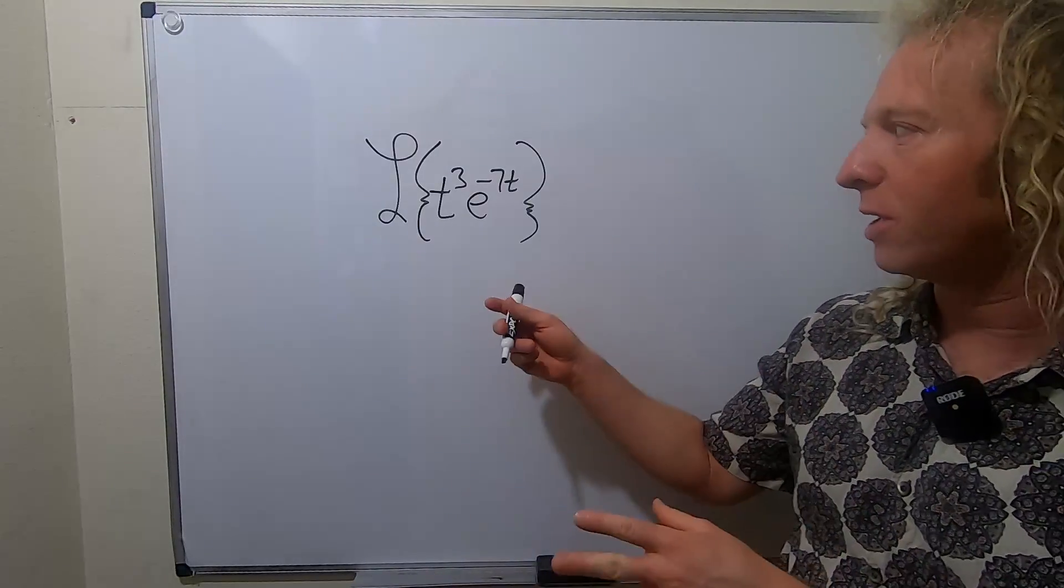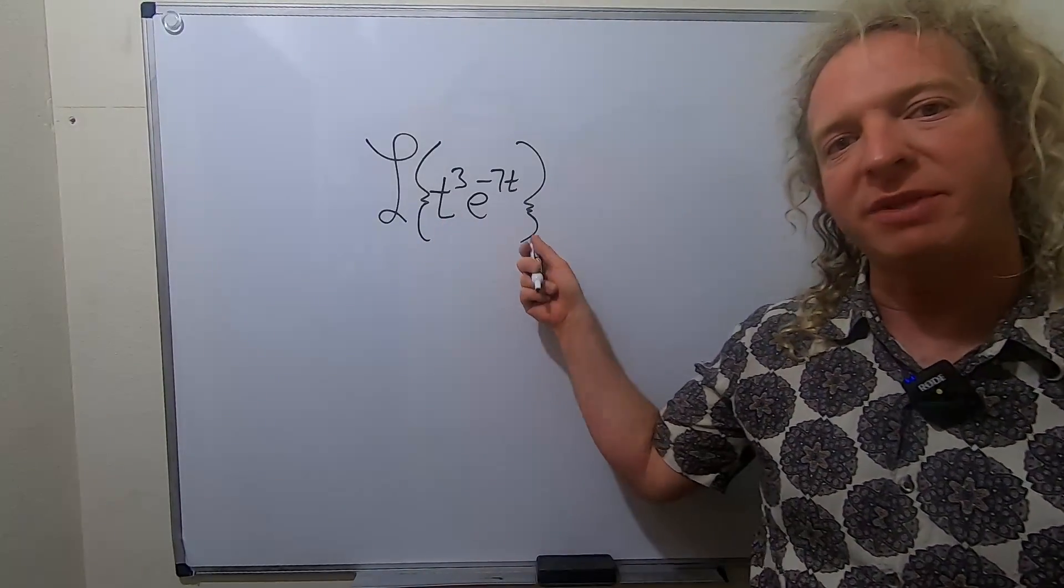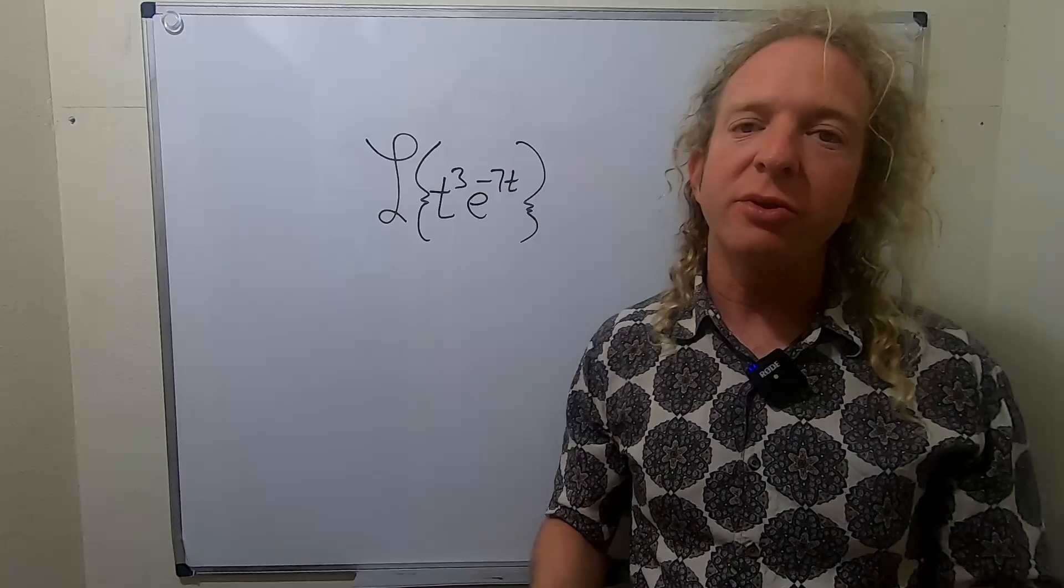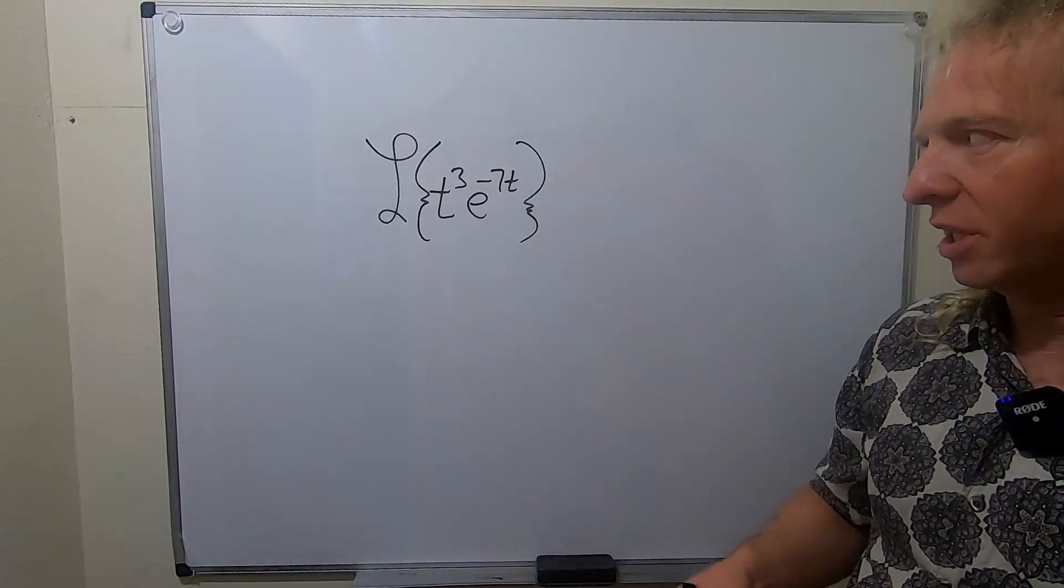In this video, we're going to find the Laplace transform of t cubed times e to the negative 7t. To do this, we're going to use something called the first translation theorem.